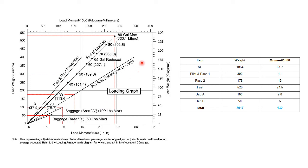For the first item, I added the pilot and front seat passenger together for a combined weight of 300 pounds. Going up the left side of the chart to 300 and straight across to intersect the pilot and front seat passenger diagonal, I then move straight down to the bottom and get a reading of 11,000 inch pounds. I record 11 in the chart. For the second row passenger at 175 pounds, I go up to the midpoint between 150 and 200, across to the second row passenger diagonal, and straight down — getting a reading of just over 13.